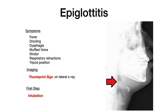If you're taking Step 2 or Step 3, they could ask what the most immediate next step is for epiglottitis. The answer will be endotracheal intubation, because in someone with epiglottitis you want to protect their airway before progressing with further treatment.